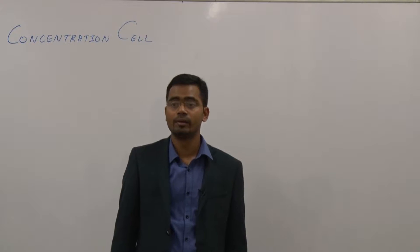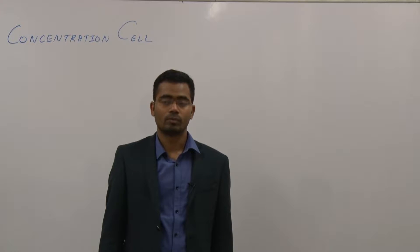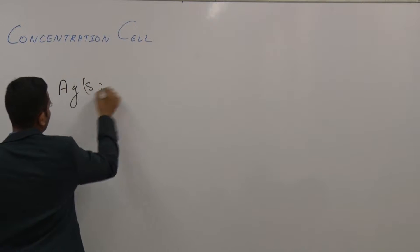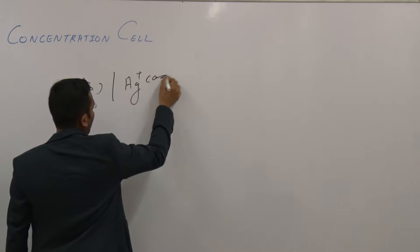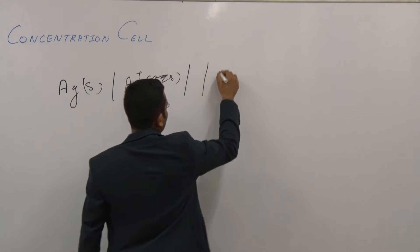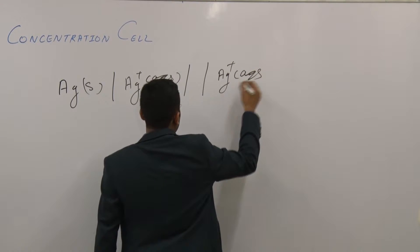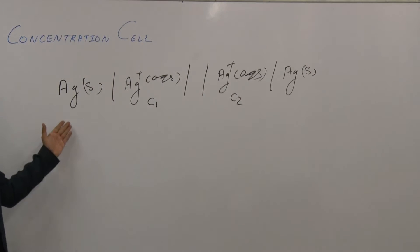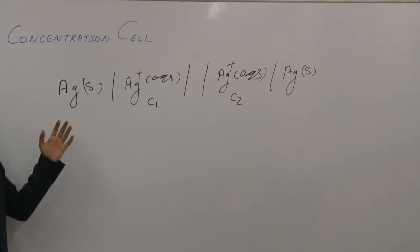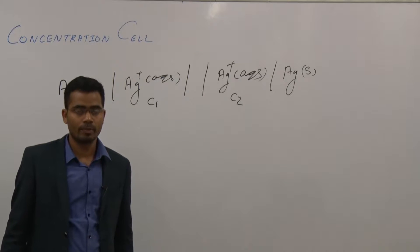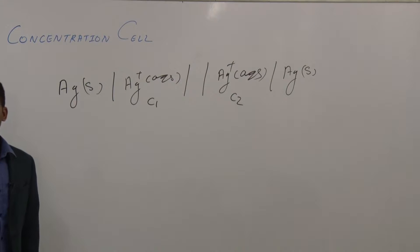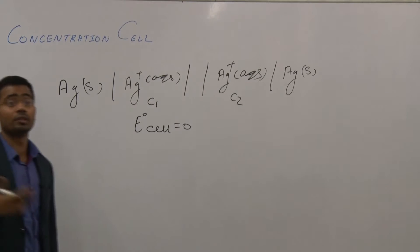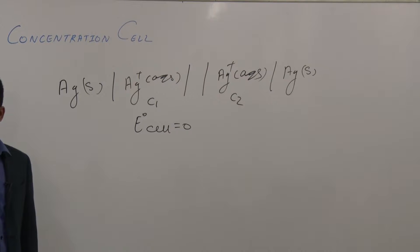The electrochemical cell having the same anode and cathode but only different concentration: Ag solid | Ag⁺ aqueous having concentration C1, and Ag⁺ aqueous having concentration C2 | Ag solid. This is the example of a concentration cell. Since both electrodes are the same, E° of the cell will be zero. A cell having a standard electrode potential of zero is called a concentration cell.